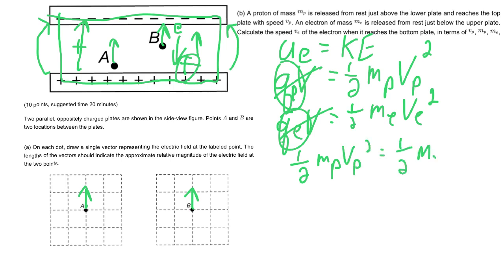So if we set these equal to each other, we're going to get one half mp vp squared equals one half mass of electron v electron squared. Now we're just going to do a little bit of algebra. So the one halves cancel out. What are we solving for, by the way? We're solving for the v of the electron. And make sure your answer only has the variables that they're giving you.